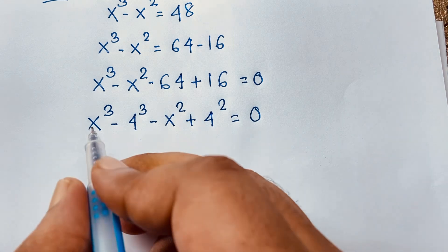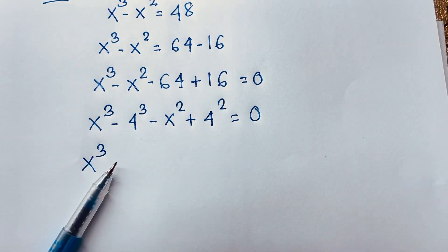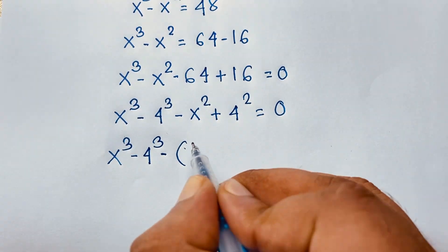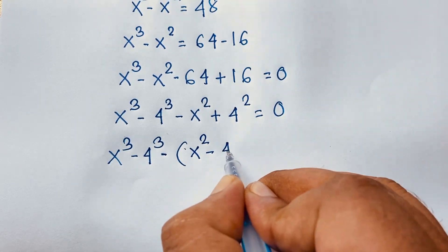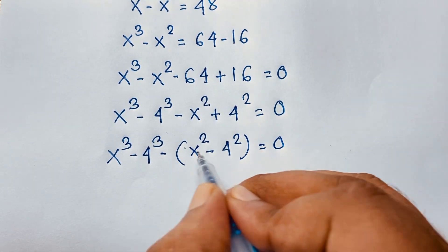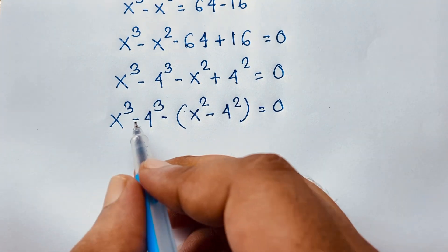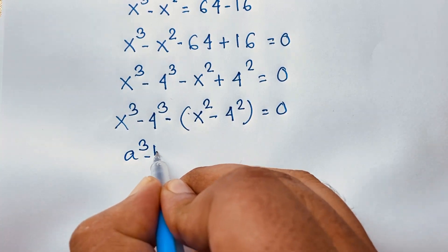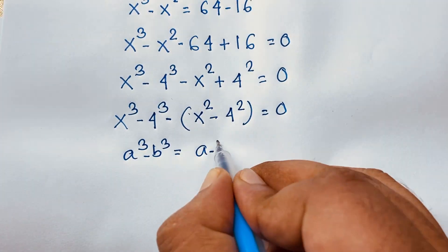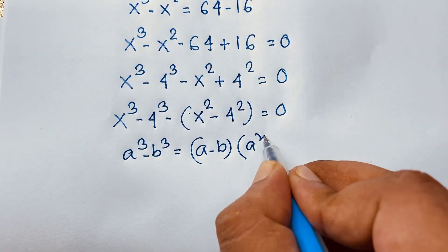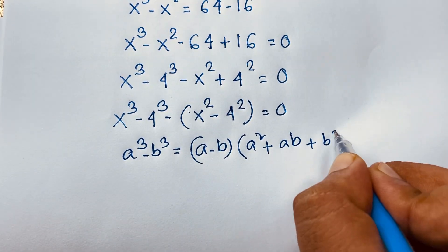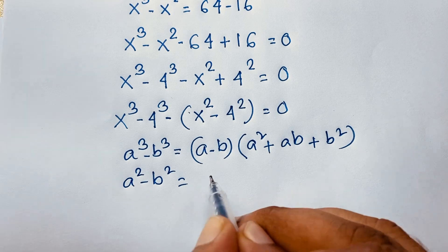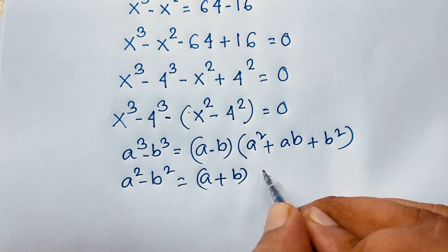Here x to the power 3 minus 4 to the power 3, then minus is common, so it will be x squared minus 4 to the power 2, equal to 0. Now here x cubed minus 4 cubed. I apply this formula: a cubed minus b cubed equals (a minus b)(a squared plus ab plus b squared). And another formula: a squared minus b squared equals (a plus b)(a minus b).